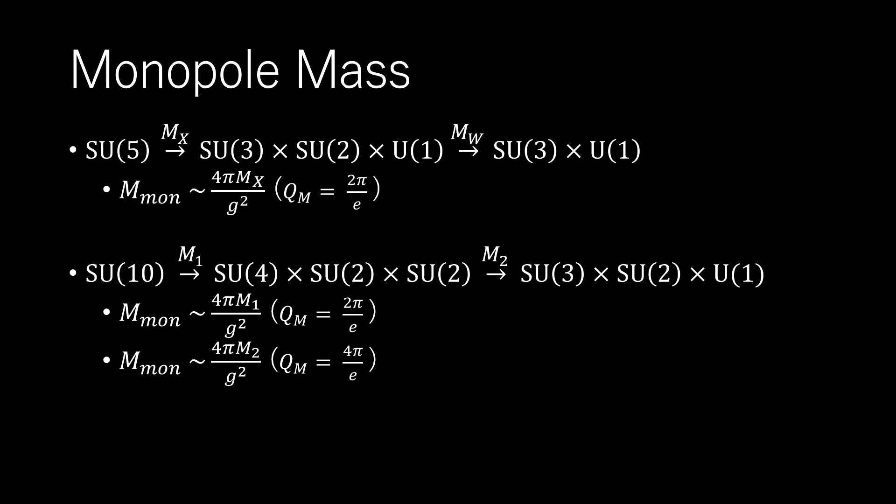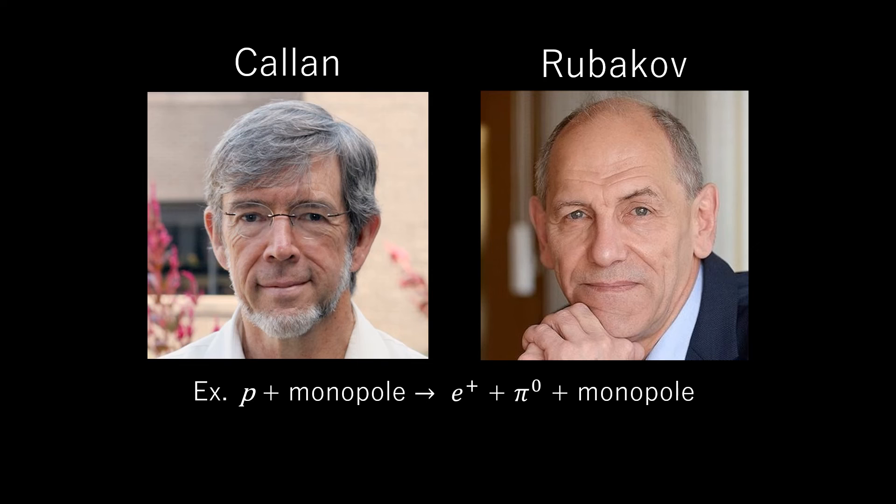The central core of a gut monopole contains the fields of the super-heavy gauge bosons that mediate baryon number violation, so one might expect that baryon number conservation could be violated in baryon monopole scattering.